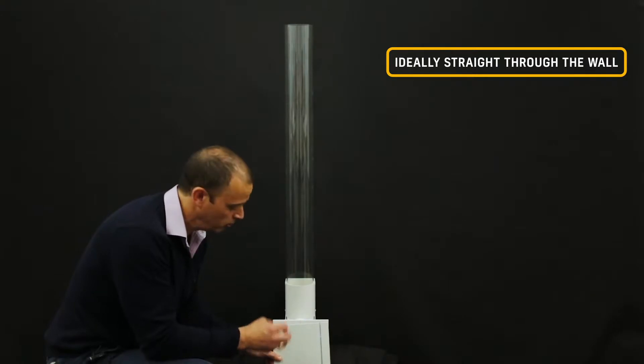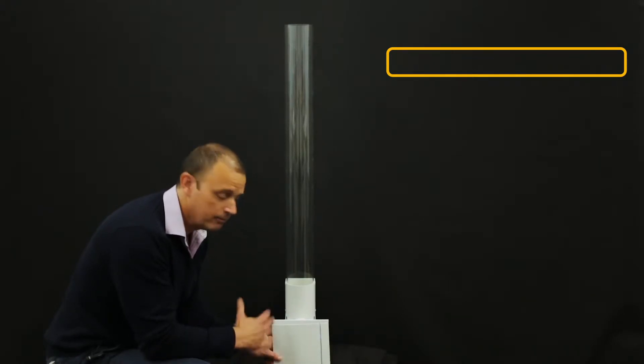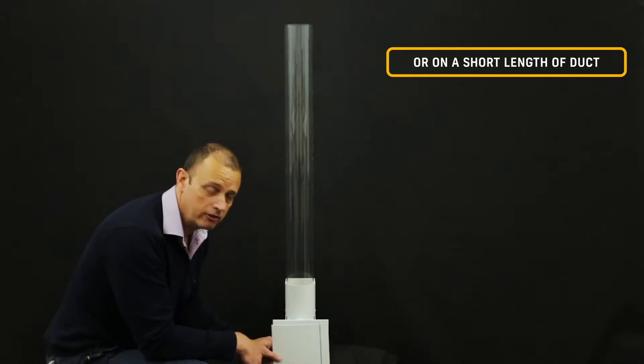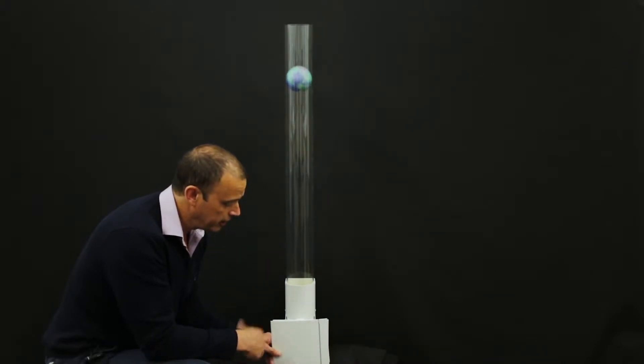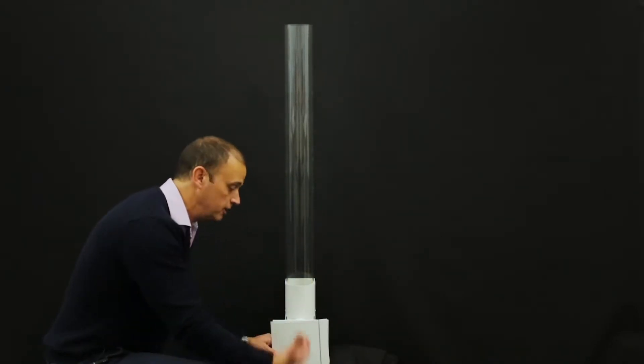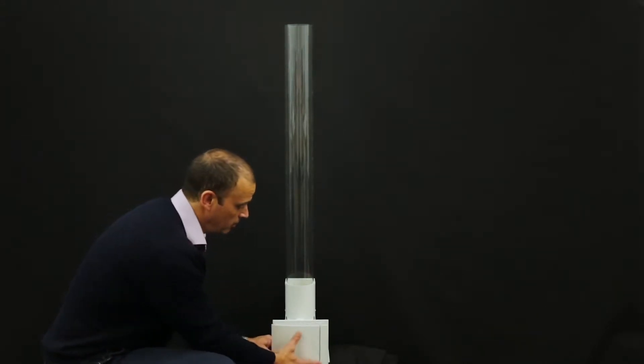So this fan wants to be mounted straight through a wall or on a short length of ducting, maybe a meter of rigid duct or anything like that. If you start installing it in a complicated system or a lot of flexible duct, it's not going to cope with it. You need to go to the other fan.